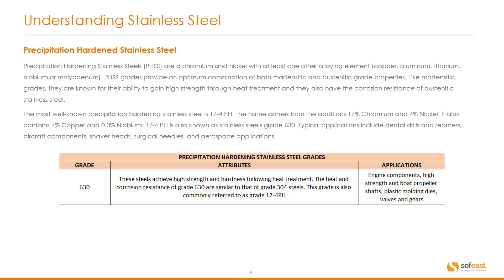The most well-known precipitation hardened stainless steel is 17-4 PH. The name comes from the addition of 17% chromium and 4% nickel. It also contains 4% copper and 0.3% niobium. 17-4 PH is also known as stainless steel grade 630. Typical applications include dental drills and reamers, aircraft components, shaver heads, surgical needles, and aerospace applications. The table shows the 630 grade along with its attributes and applications.